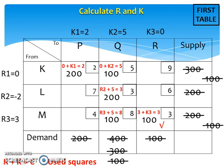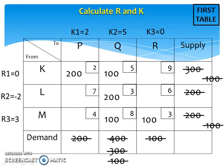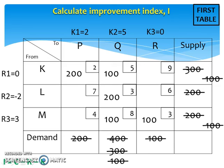After we have calculated all R's and K's, the next thing to do is to calculate the improvement index. The improvement index is denoted as I and is calculated using the formula I equals C minus R minus K. The improvement index must be calculated for all unused squares. For example, at this unused square, we have 9 minus 0 minus 0, so we get improvement index equals 9.